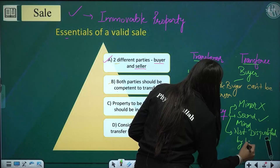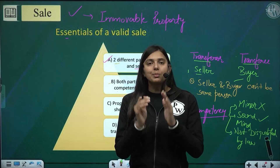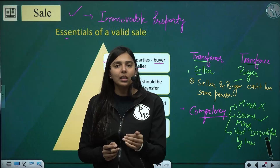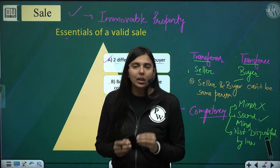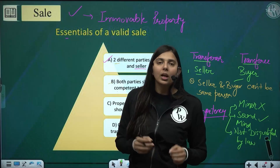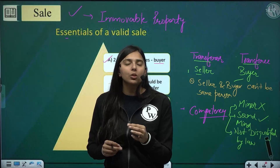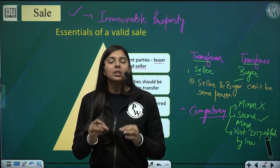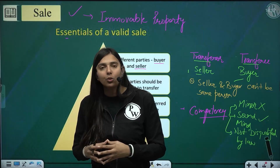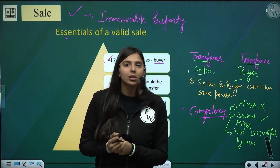The third aspect of competency is that the person should not be disqualified by law. A person is disqualified when the law puts a restriction on them from transferring or buying property. This includes an enemy alien, or any person declared insolvent by the court. A bankrupt person cannot be a buyer or a seller. So this is the second condition to be fulfilled for a valid sale.